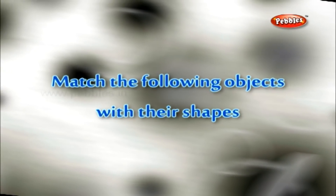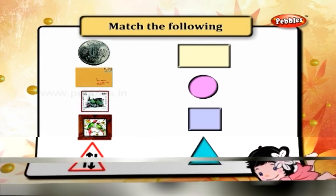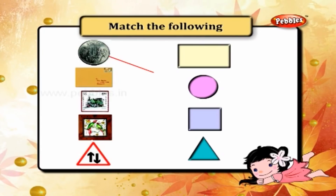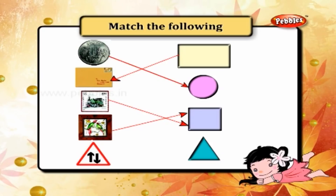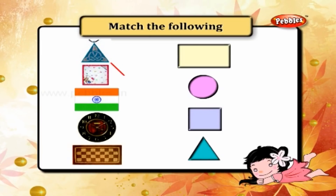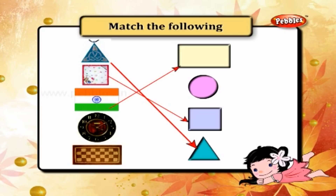Match the following objects with their shapes. The coin is circular in shape. The postcard is rectangular in shape. The stamp is a square. The poster is also a square. The signal board is triangular in shape. The cracker is triangular in shape. The handkerchief is a square. The flag is rectangular in shape. The clock is circular in shape. The board is rectangular in shape.